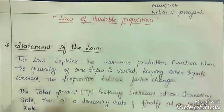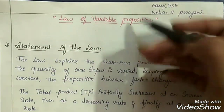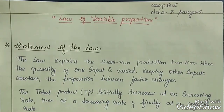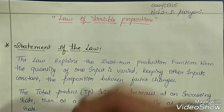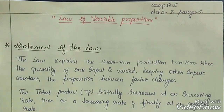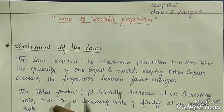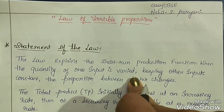Law of Variable Proportions. Before coming to this topic, let us revise some of the topics from this chapter which are discussed earlier and which are very important to understand this topic. First of all, we have production function. Production function shows the relationship between the input and output. There are two types of factors of production: Variable Factors of Production and Fixed Factors of Production.